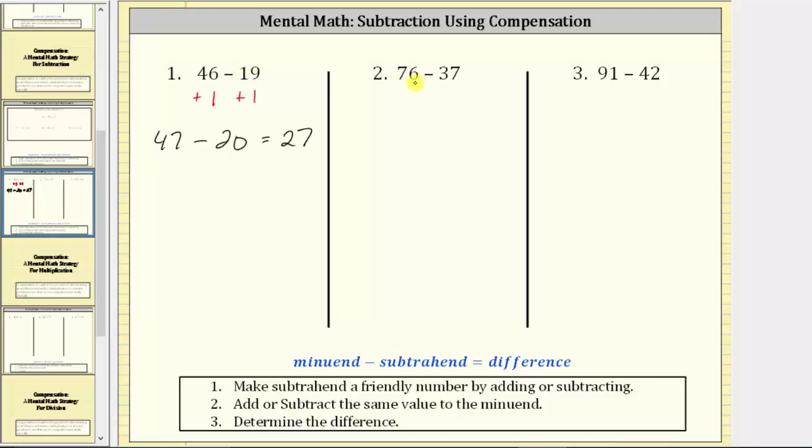Number two, we have 76 minus 37. It's much easier to subtract 40 than 37, which means for the first step we add three to 37. If we add three to 37, we must also add three to 76 to create an equivalent difference. 76 plus three is 79.